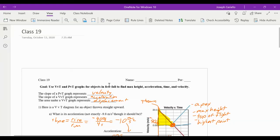Hey everyone, check out class 19. We used velocity versus time and position versus time graphs for objects in free fall to find max height, acceleration, time, and velocity. Remember, when I say free fall, I'm not just referring to objects falling, but also going up in the air. Basically, free fall is any time an object is under the influence of gravity only.